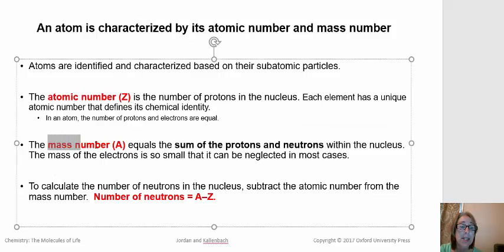The mass number is the sum of the protons and neutrons within the nucleus. And I want to point out that it is a number, a counted number. So it will always be a whole number. It will never, ever be a decimal. So the mass number is a counted number.